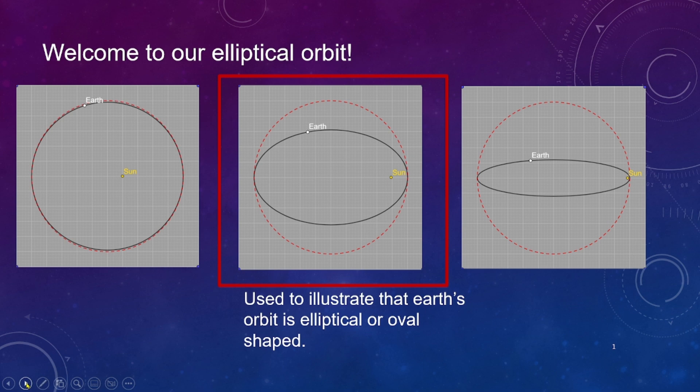Hello. Let's have a discussion about our elliptical orbit. The diagram in the center is most commonly used to illustrate that Earth's orbit is elliptical or oval shaped.